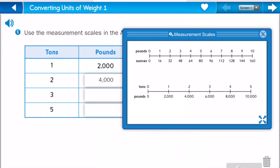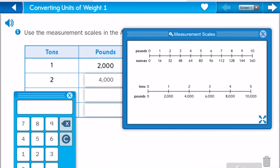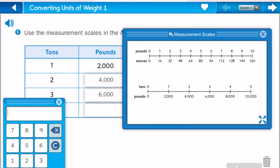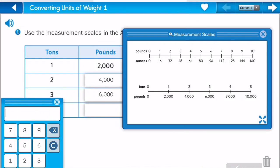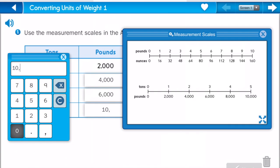For 3, we go over to 3, and we look down at the pounds. We see that it equals 6,000. We want to see what this one is. We see that it's 5, and we see that 5 equals 10,000.